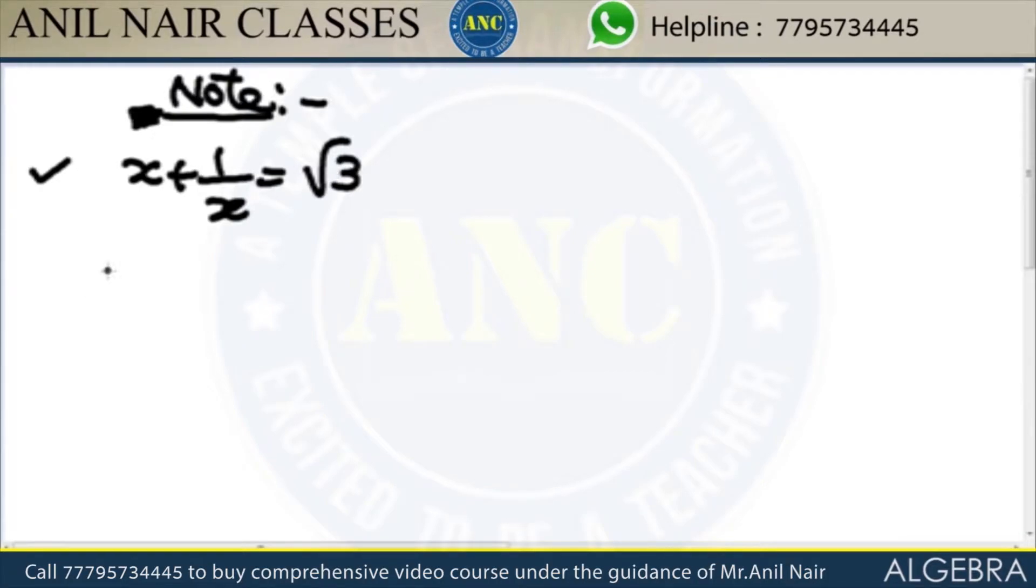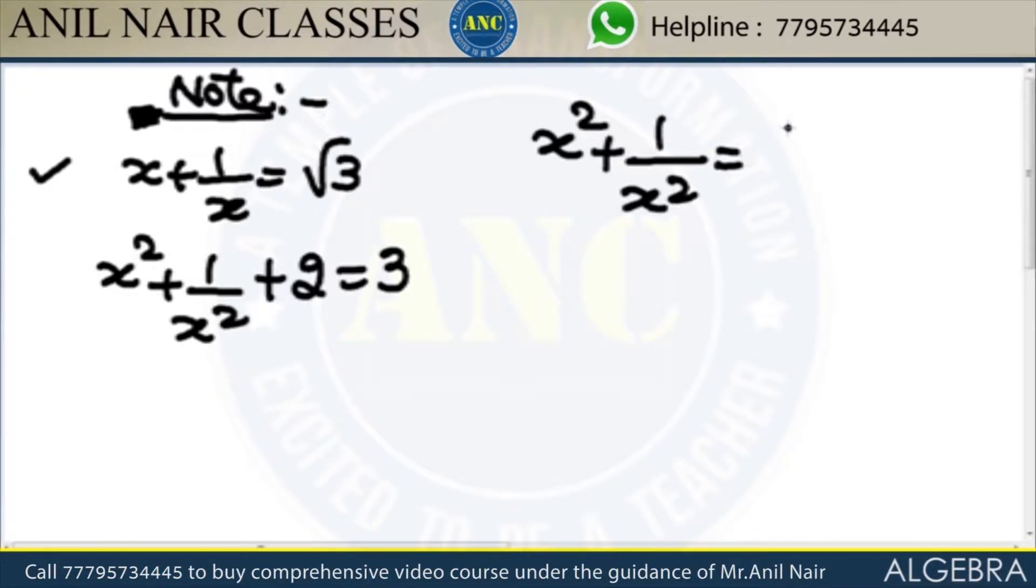Another SSC replica question. If I square it, x square plus 1 by x square plus 2 equal to 3. x square plus 1 by x square, it is nothing but 1.